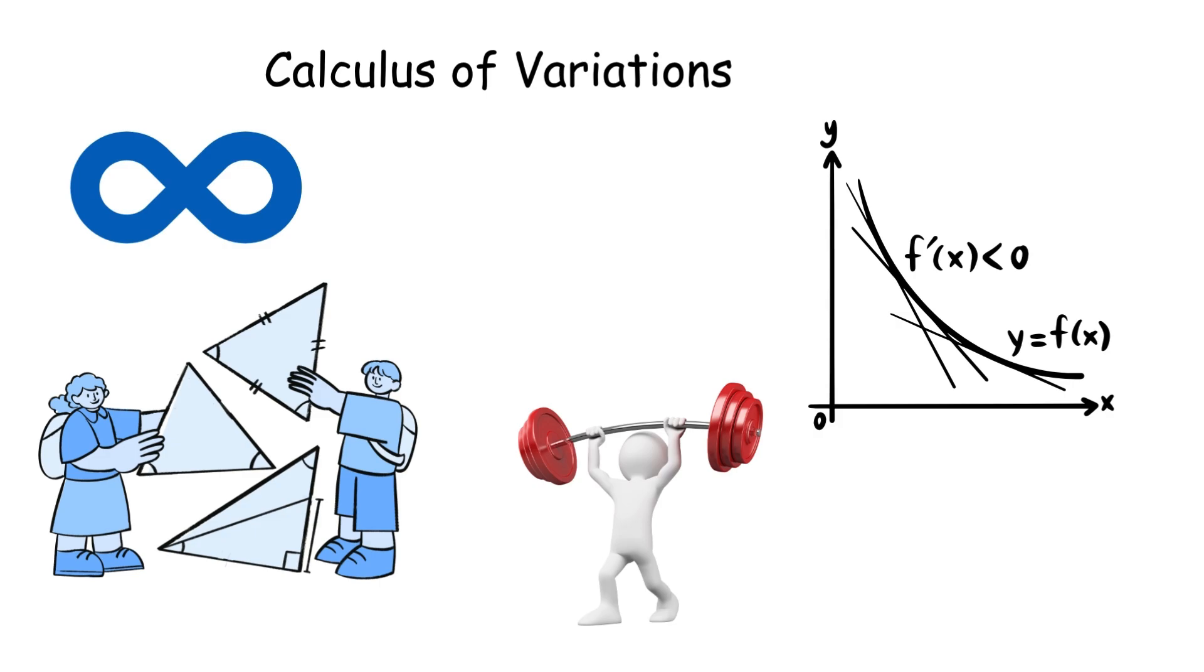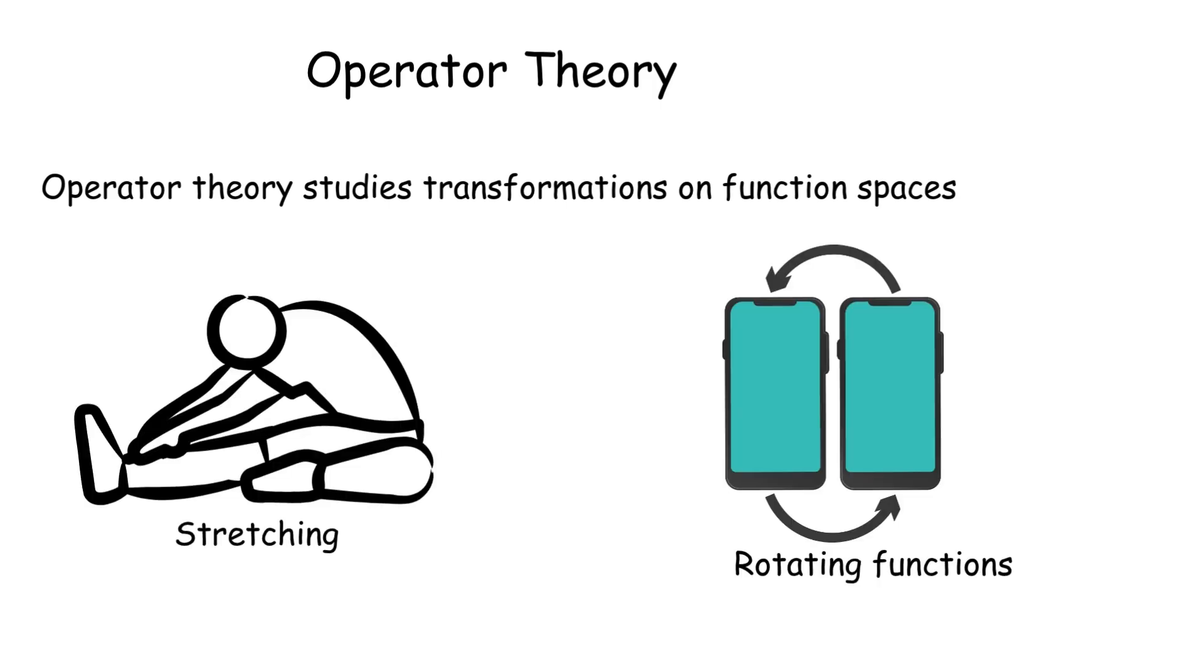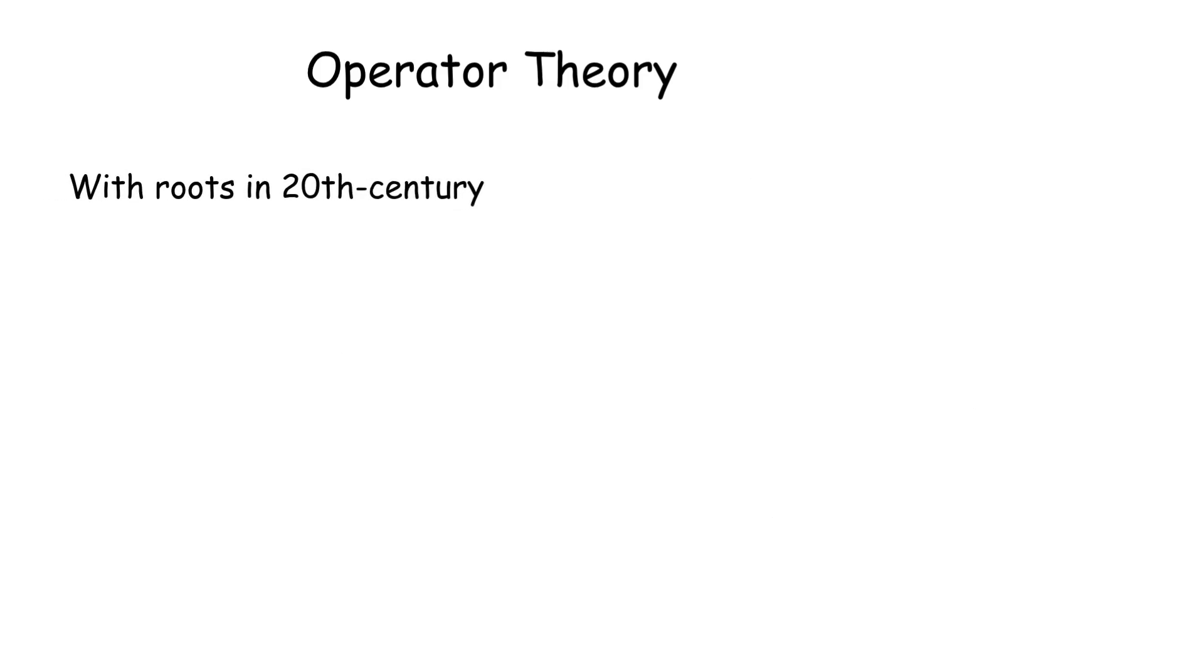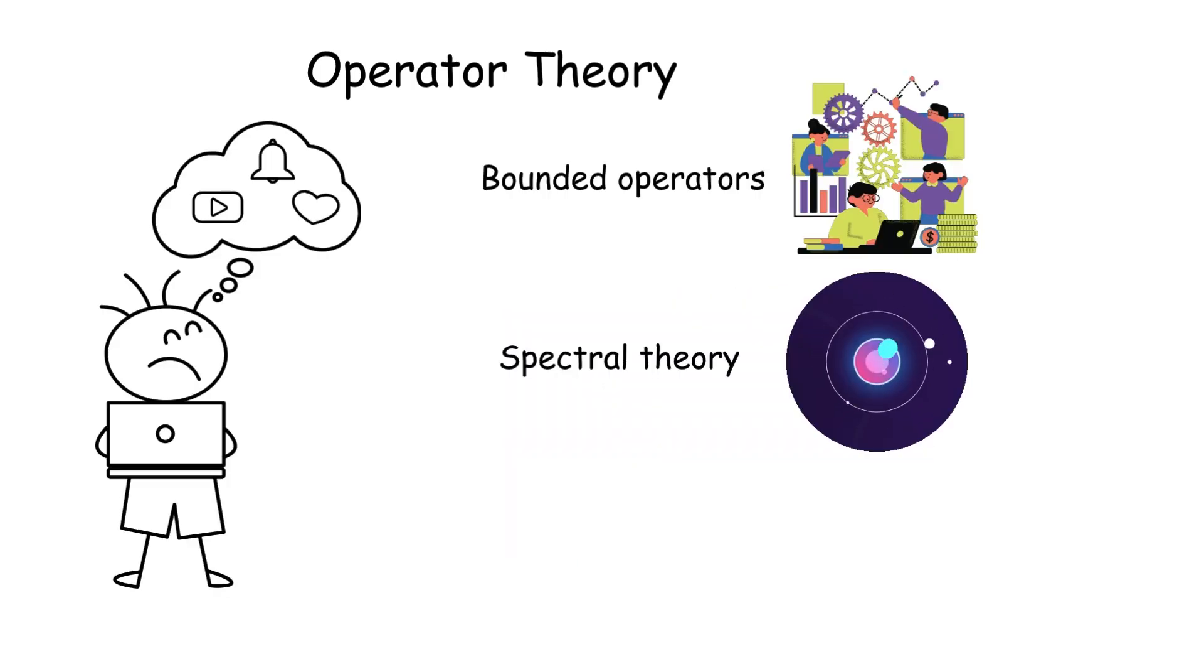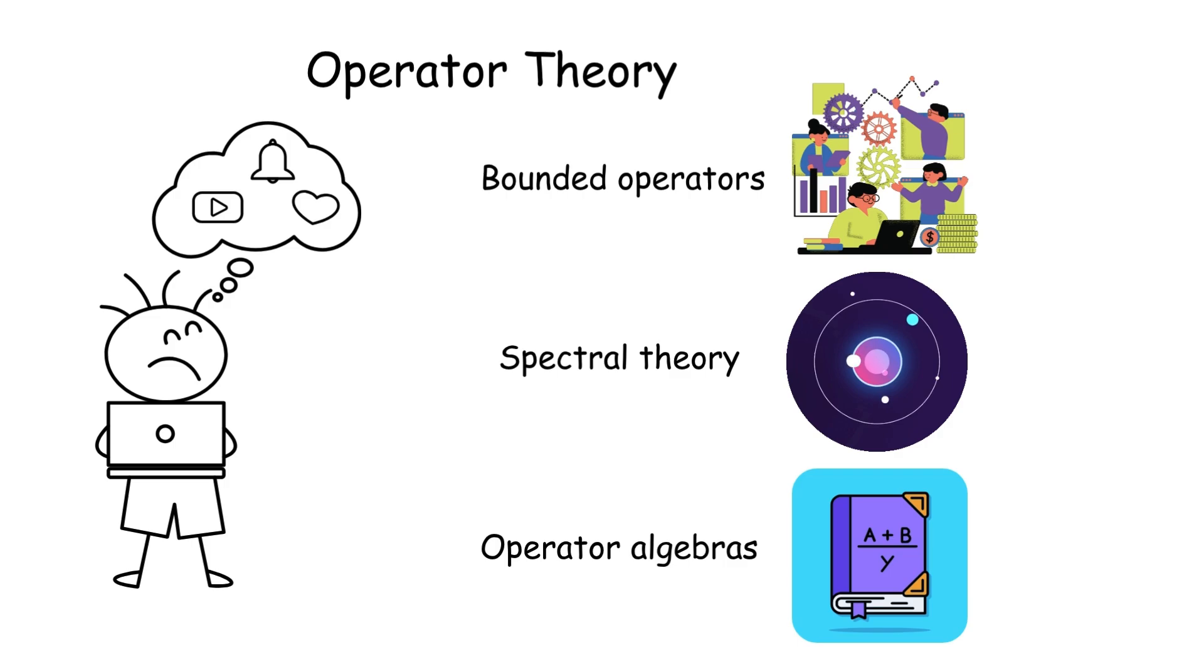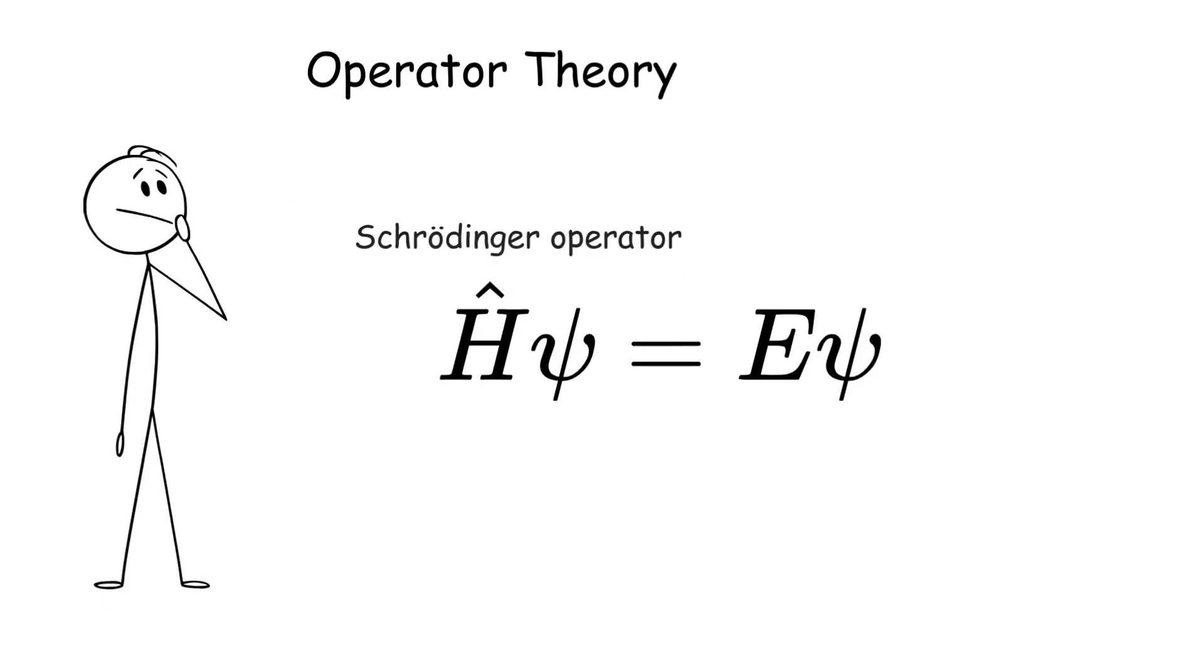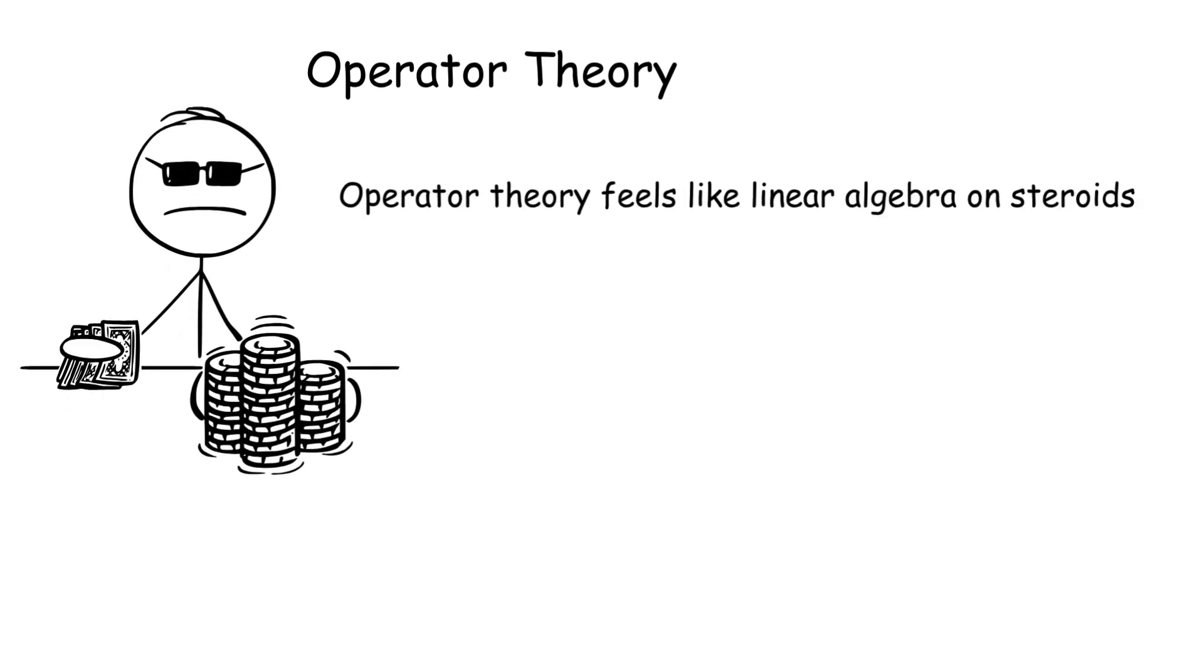Operator theory studies transformations on function spaces, like stretching or rotating functions. A subset of functional analysis, it focuses on operators in Banach or Hilbert spaces, with roots in 20th century quantum mechanics. Key concepts include bounded operators, spectral theory, and operator algebras. It's crucial for solving differential equations and modeling quantum systems, where operators represent physical observables. For example, the Schrödinger operator describes a particle's energy. Operator theory feels like linear algebra on steroids, turning functions into infinite-dimensional vectors.